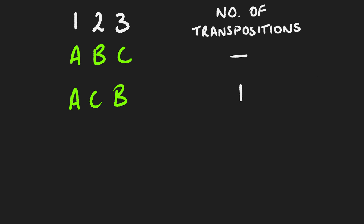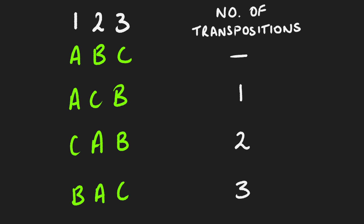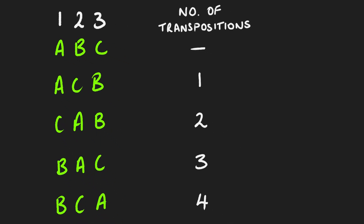If we go from A, C, B to C, A, B — that's two transpositions from the initial A, B, C. And then continuing on: from C, A, B to B, A, C — that's three transpositions, three swaps from the original A, B, C. B, C, A is four transpositions, and C, B, A is five transpositions. An interesting thing about this is that the number of transpositions required to get to a certain arrangement will always remain either even or odd — it cannot switch between the two.